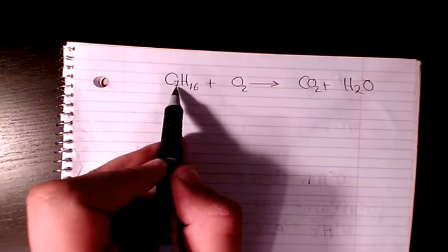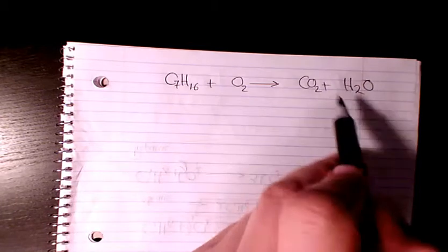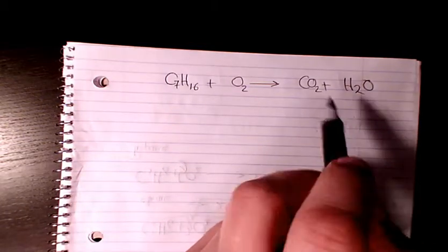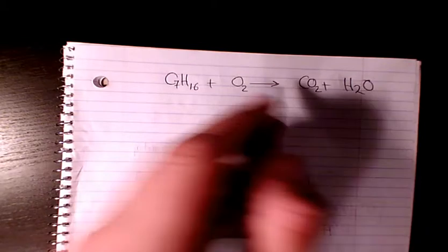So heptane is C7H16 and the product of complete combustion is always carbon dioxide and water.